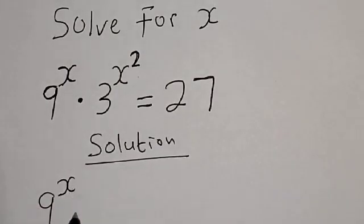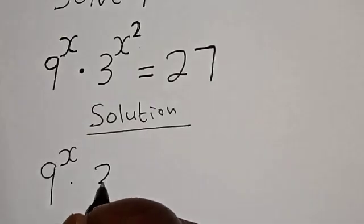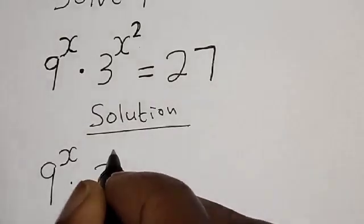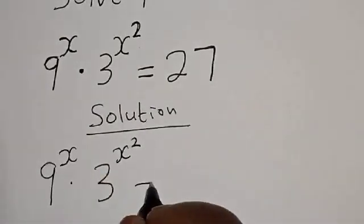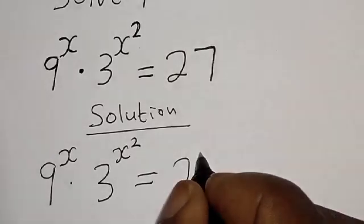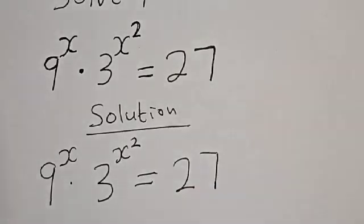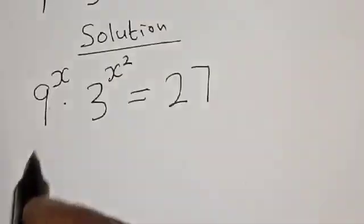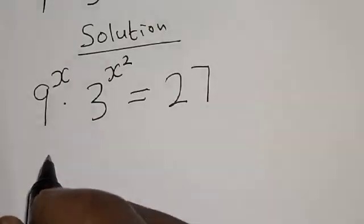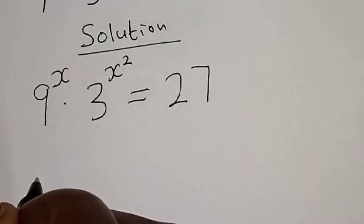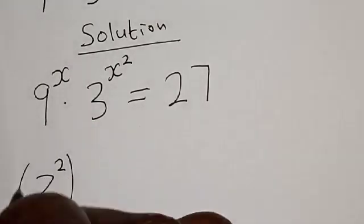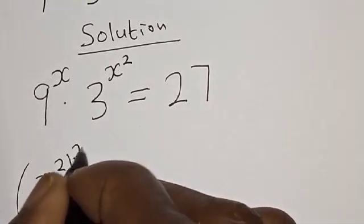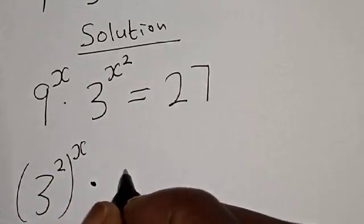Solution: we have the given equation 9 raised to power s multiplied by 3 raised to power s squared is equal to 27. Now, 9 raised to power s can be expressed as 3 squared raised to power s.